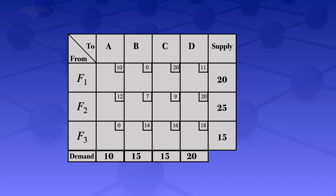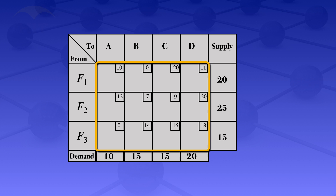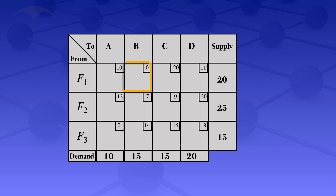What we need to do is allocate units in the cells that have been highlighted. To allocate using the least cost method, we look at the least cost among the highlighted cells. The least costs we see are a zero and a zero. When we have a tie like that, we look at the lesser numbered row, so we start with the row on top and allocate in that cell.